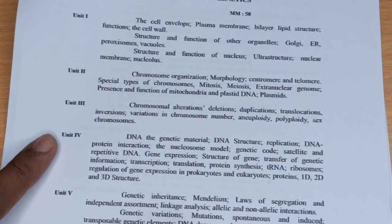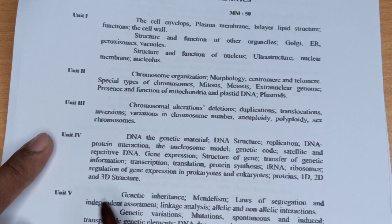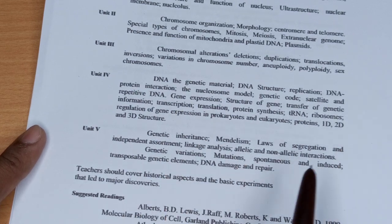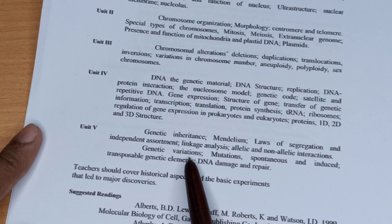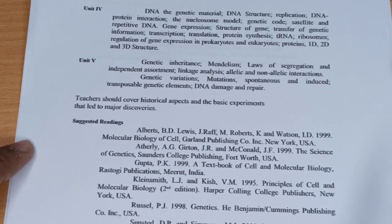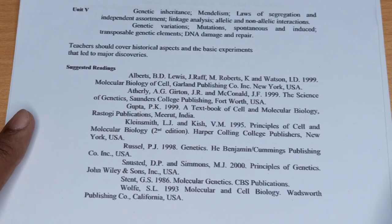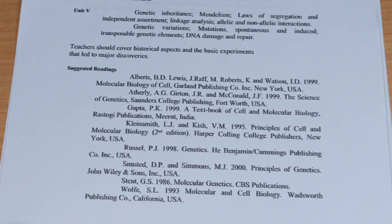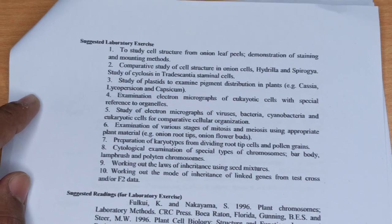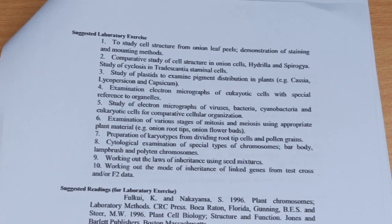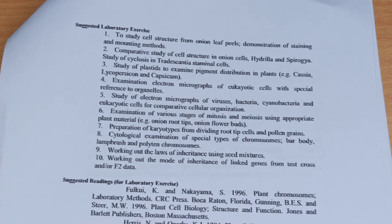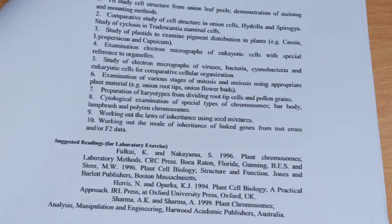Unit 4 में DNA — the genetic material है। Unit 5 में genetic inheritance: Mendelism वगैरा और genetic variations भी पढ़ेंगे। लास्ट में कुछ books recommend की गई हैं और suggested laboratory exercises भी mention की गई हैं — आप चाहें तो screenshot ले लें।